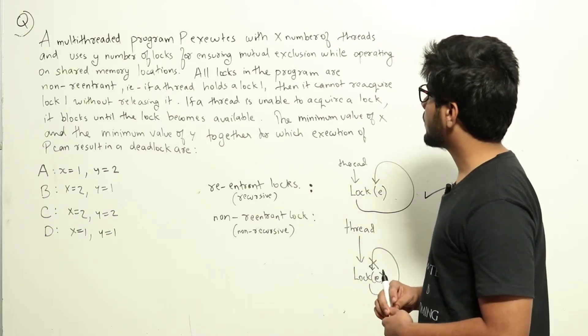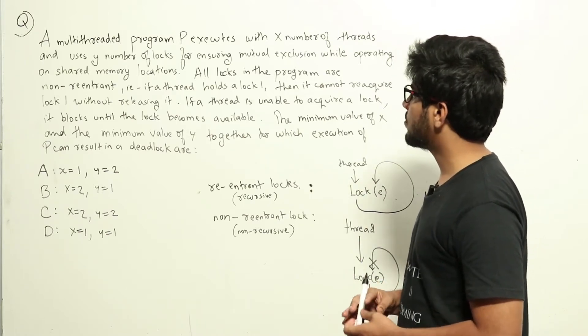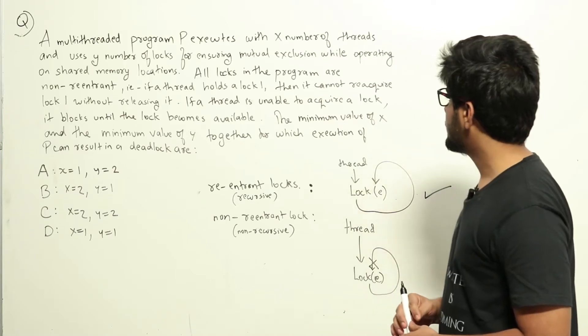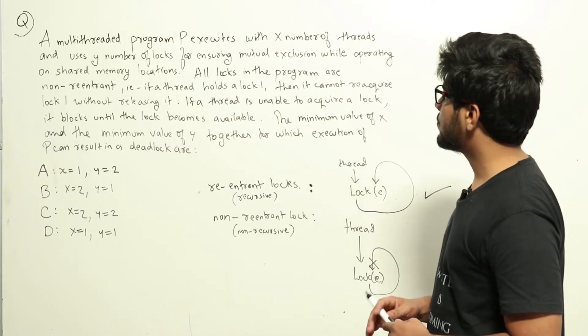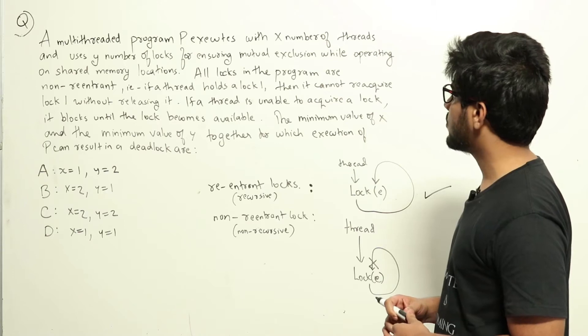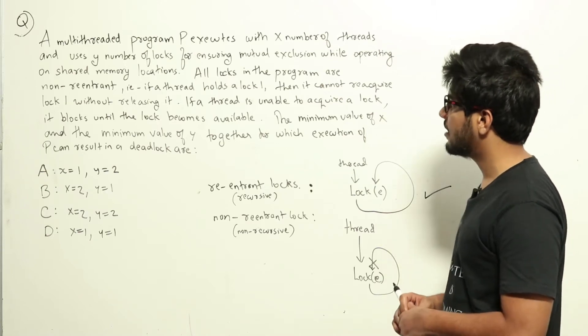If a thread is unable to acquire a lock, it blocks until the lock becomes available. The minimum value of X and the minimum value of Y together for which the execution of P can result in a deadlock are: